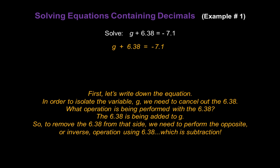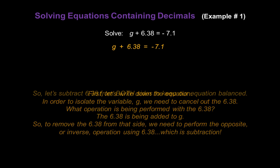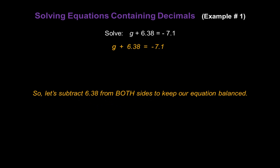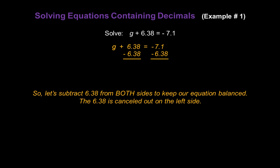So to remove the 6.38 from that side, we need to perform the opposite, or inverse, operation using 6.38, which is subtraction. Let's subtract 6.38 from both sides to keep our equation balanced. I'll subtract 6.38 on the left and subtract 6.38 on the right. The 6.38 is cancelled out on the left-hand side, because when we do that math we end up with 0. And on the right side, negative 7.1 minus 6.38 is negative 13.48.